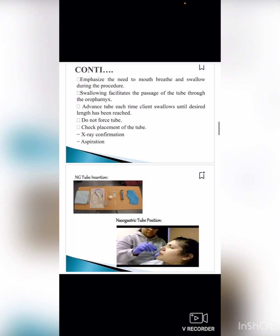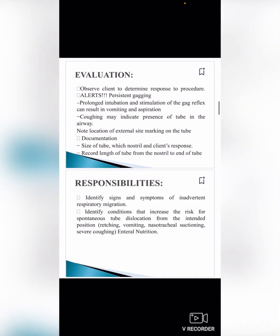Do not force the tube. Check placement of the tube via x-ray confirmation or aspiration. Evaluate the client to determine their response to the procedure. Be alert for persistent gagging, as prolonged intubation and stimulation of the gag reflex can result in vomiting and aspiration. Coughing may indicate the presence of the tube in the airway. Note the location of the external site marking on the tube.